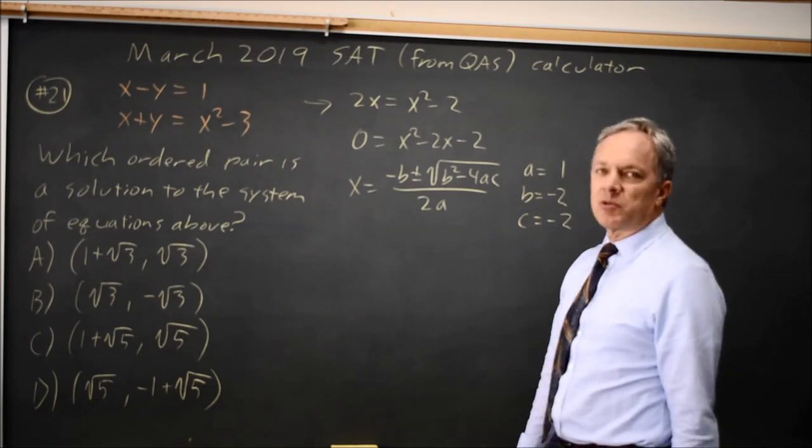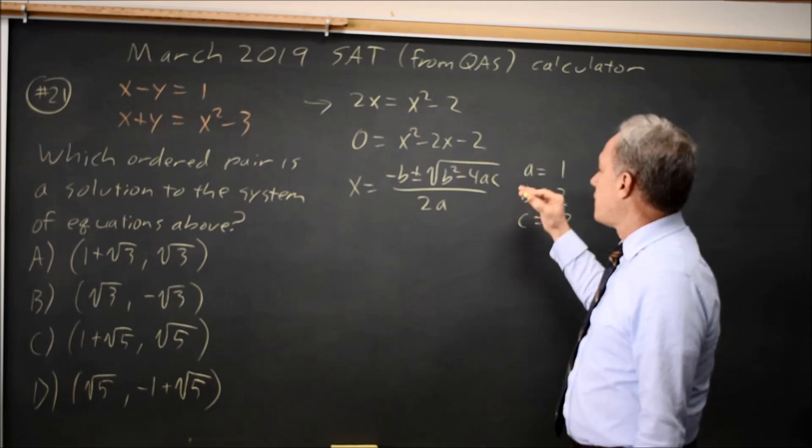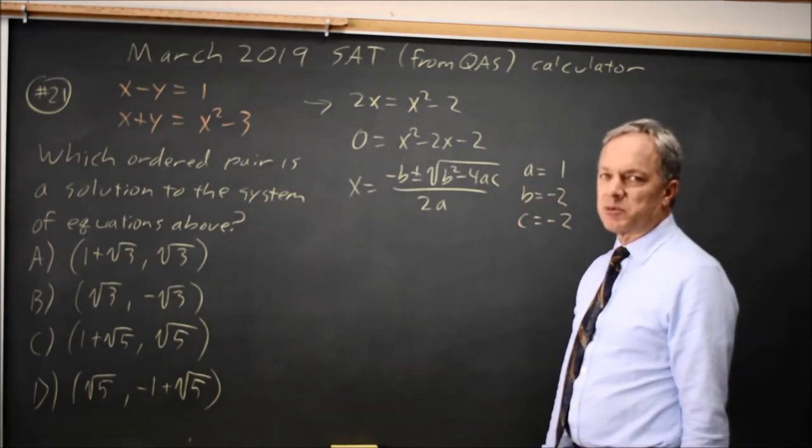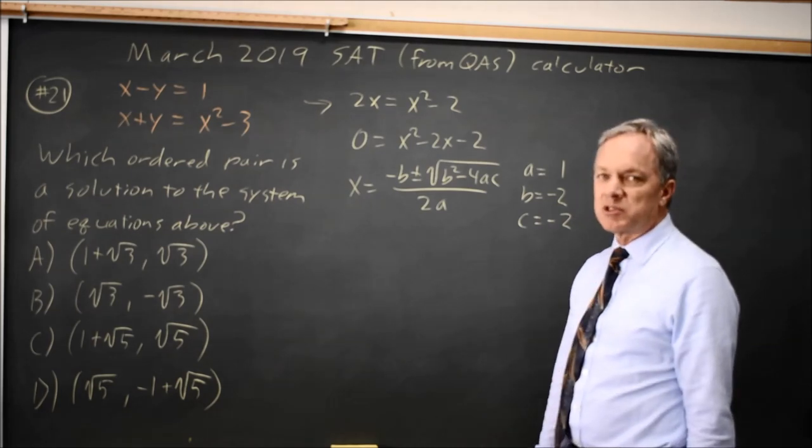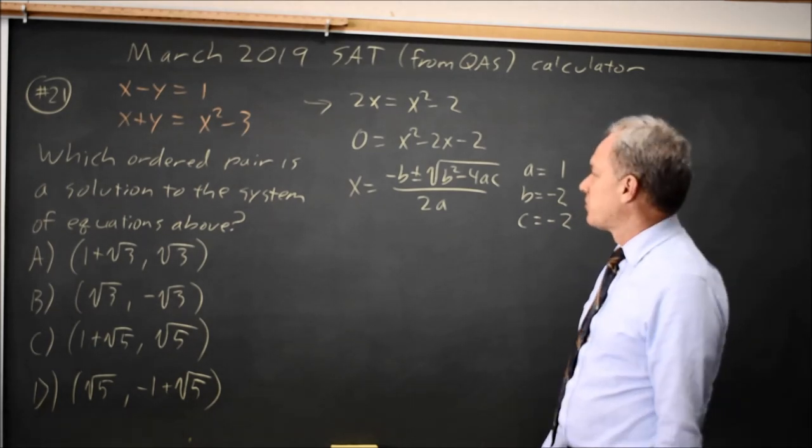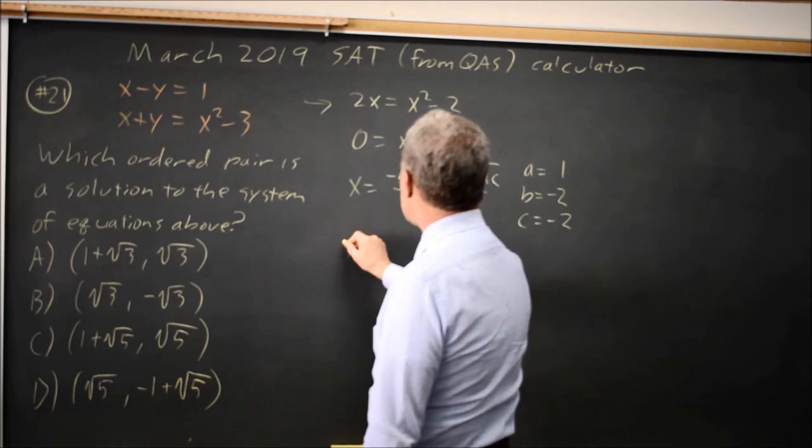I always write out my quadratic formula, and I write out the values of a, b, and c, partly so I don't substitute them in the wrong spot, but also so I don't drop a negative because most of us are very good at dropping negatives, and I have a lot of experience dropping negatives. I try to avoid it.